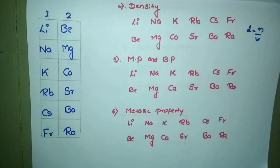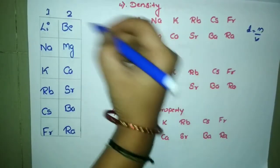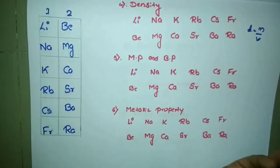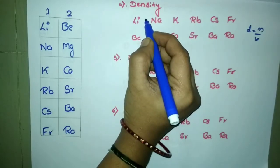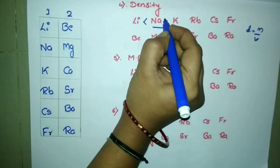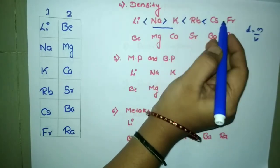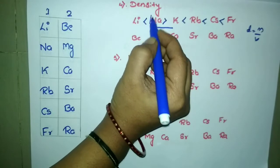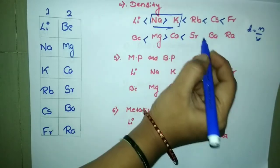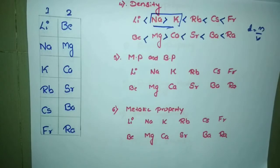Let me write out the trend and then explain the exceptional cases. Lithium is less dense than sodium; however, sodium is more dense than potassium. Then potassium is less dense than rubidium, followed by cesium and francium. This is the exceptional case. Similarly, beryllium and magnesium are more dense than calcium — this is also an exception to the general trend.